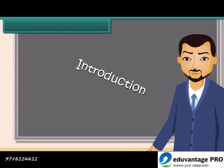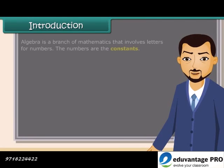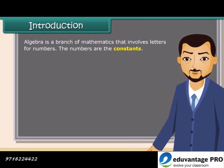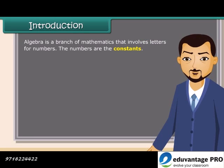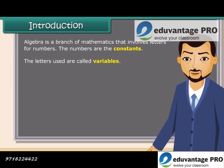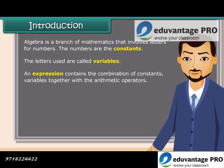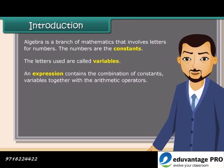Algebra is a branch of mathematics that involves letters for numbers. The numbers are the constants, and the letters used are called variables. An expression contains the combination of constants and variables together with the arithmetic operators.